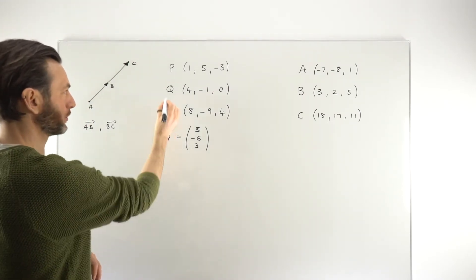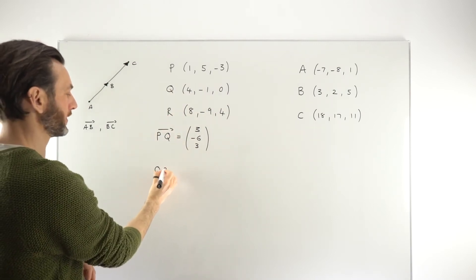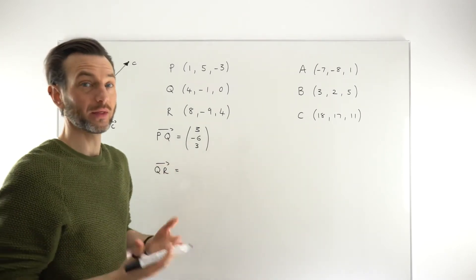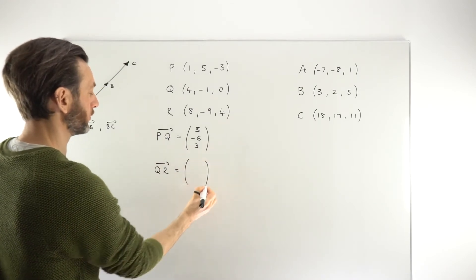Similarly, we need to make our second vector, which is from Q to R. So vector QR, just going through the same method. The method you use might be a different way. It might be R minus Q. Now, that's a different method for getting the component vector, but either way is fine. So just doing the same thing.